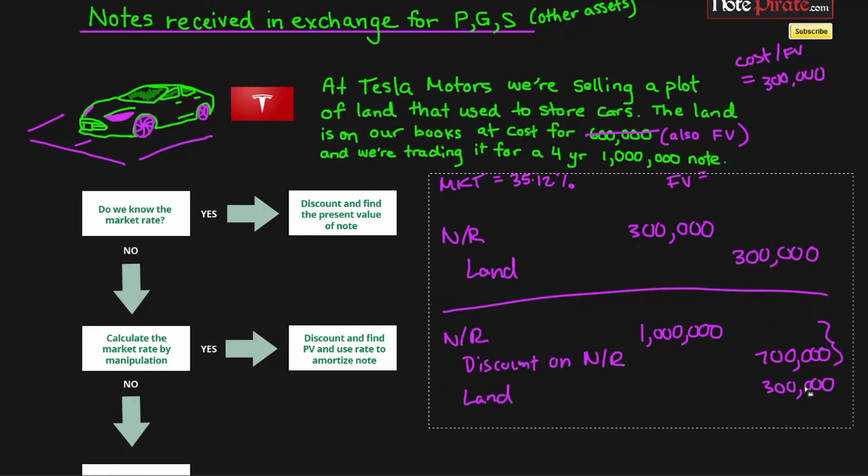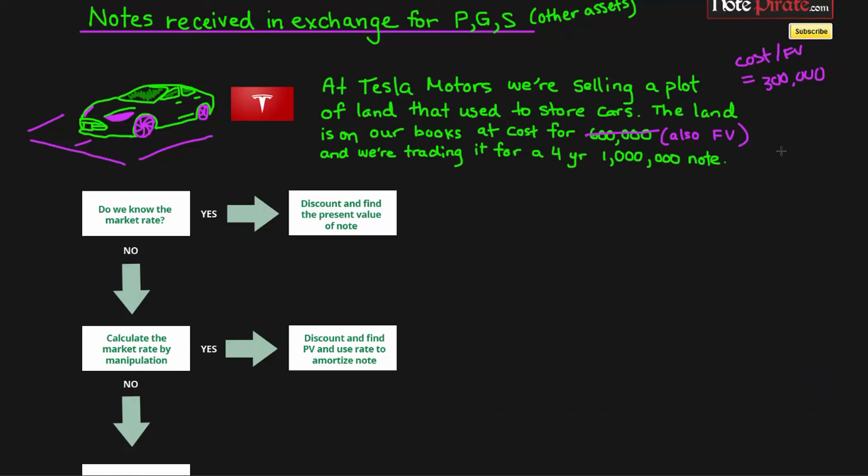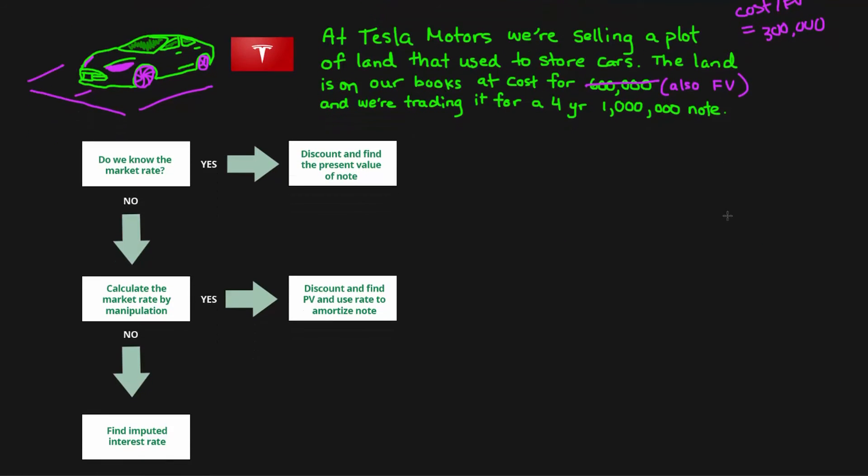The last part I wanted to talk about is the imputation or imputed interest rate. Looking at this example, let's continue with the $300,000 cost fair value of the land. If we're giving up this piece of land and receiving a note in exchange, we're giving them the land and they're giving us that note. We're essentially conducting a financing deal because we're receiving just a note, a promise to pay a certain amount at a later date, the $1 million. We're financing them $300,000, because that's how much our land is worth.